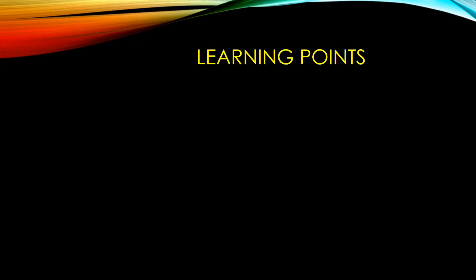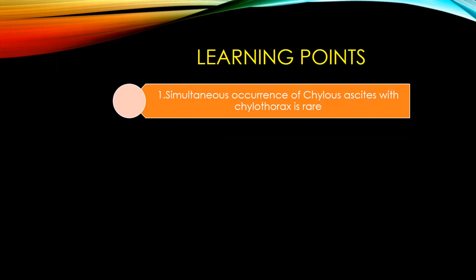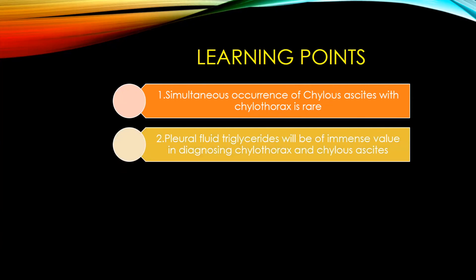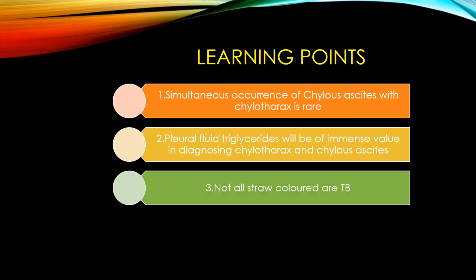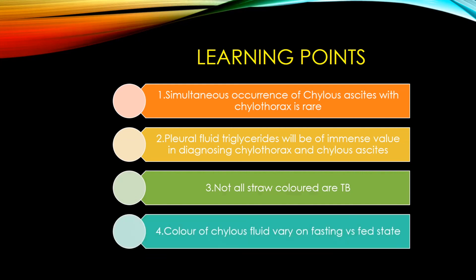Lessons learned from this case: First, the simultaneous occurrence of chylous ascites with chylothorax is a very rare association. Second, pleural fluid triglycerides are of immense value in diagnosing chylothorax and chylous ascites — triglycerides had never been ordered previously for this child. Third, not all straw-colored fluid is TB. Fourth, the color of chylous fluid varies depending on fasting versus fed state.